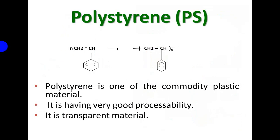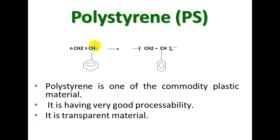The second polymer in today's discussion is polystyrene (PS). In styrene, there is also a double bond in the molecule. One of the double bonds — the pi bond — breaks down and is free to connect with other styrene molecules, making a chain of polymer that is called polystyrene.